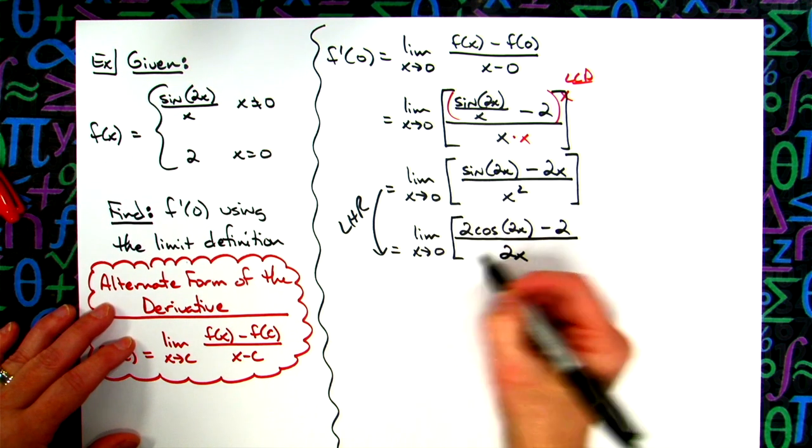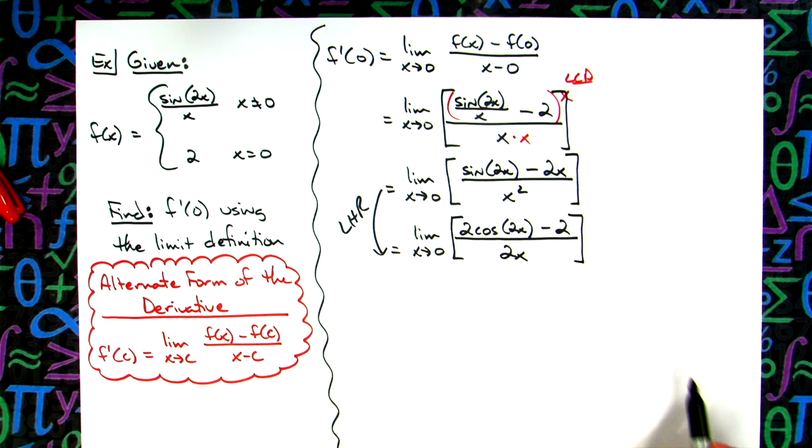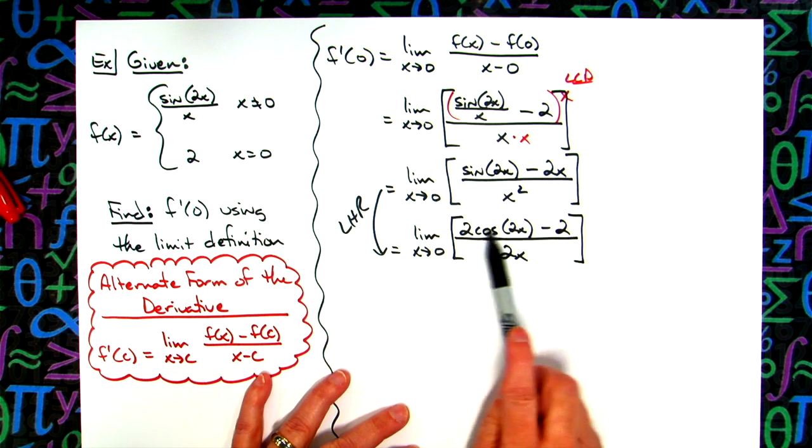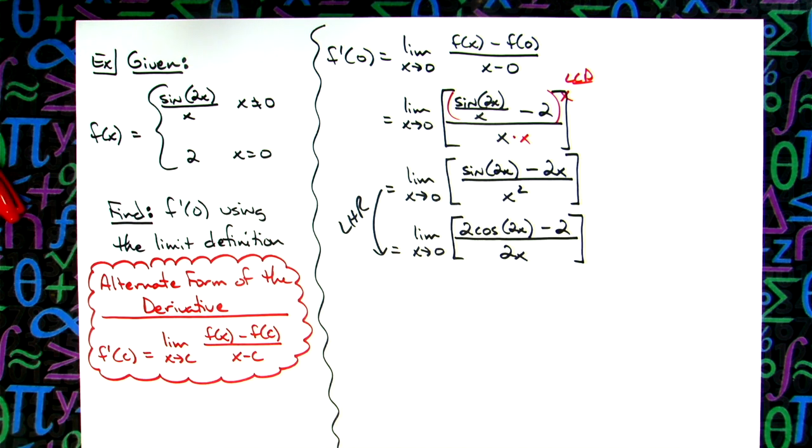We'll go ahead and put those square brackets back in, and then at this point right here I think it's going to make it a little bit easier if I factor out a 2 on the top so that I can cross out the 2's.